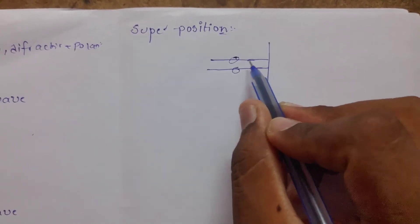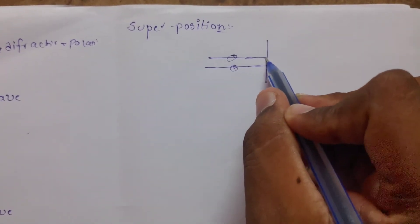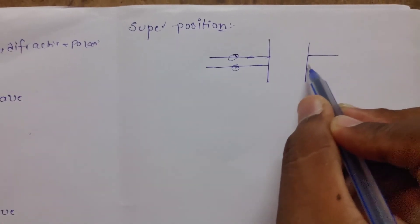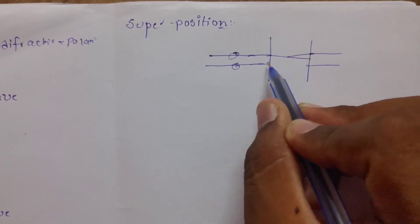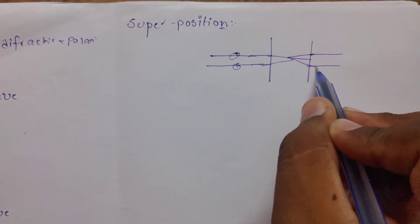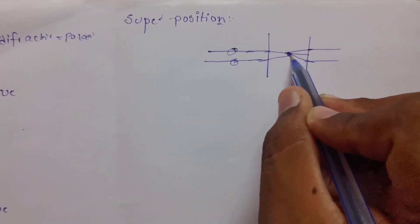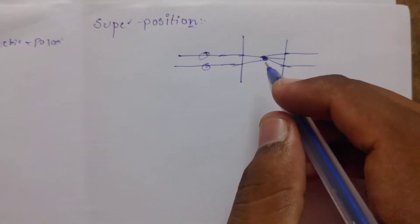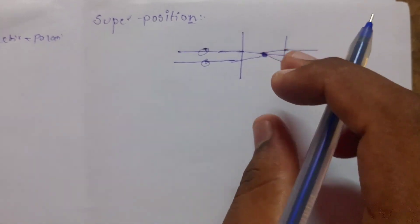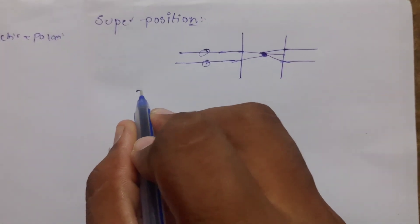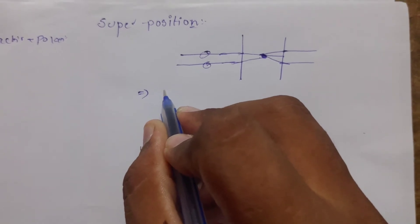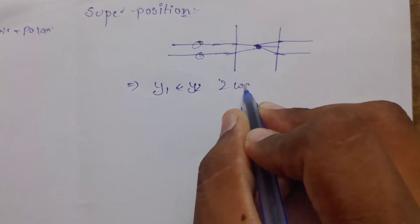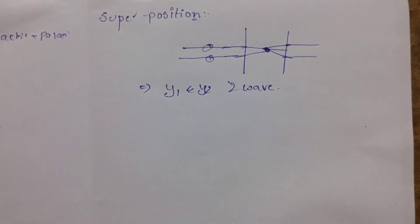Different frequencies with different displacements travel through the same medium. The superposition principle is important. Let y1 and y2 be the displacement of any two waves respectively at a point.